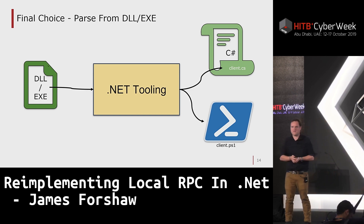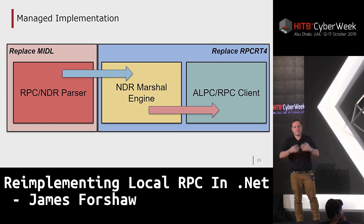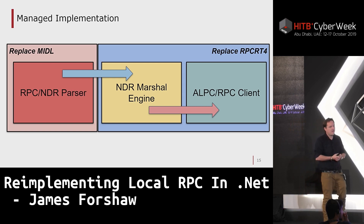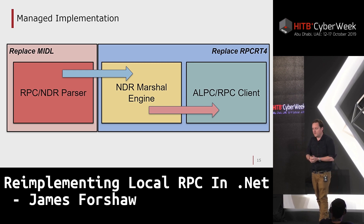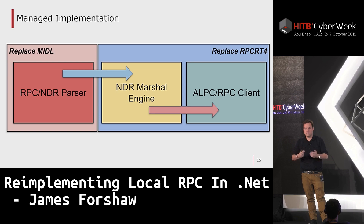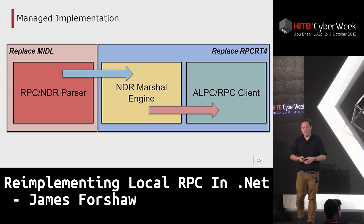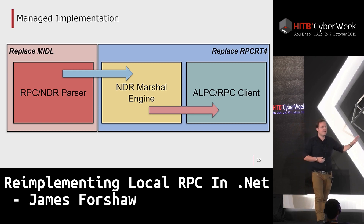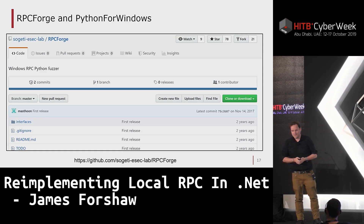There are three parts to my managed implementation: extractor code to pull out RPC server interface information; some code to actually marshal parameters — replacing the interpreter — to generate correct data to transfer on the wire; and finally an ALPC RPC client to communicate over the transport mechanism. The first part replaces MIDL, the second replaces the RPC runtime. If I can implement all of this in .NET, I don't need any unmanaged code at all.